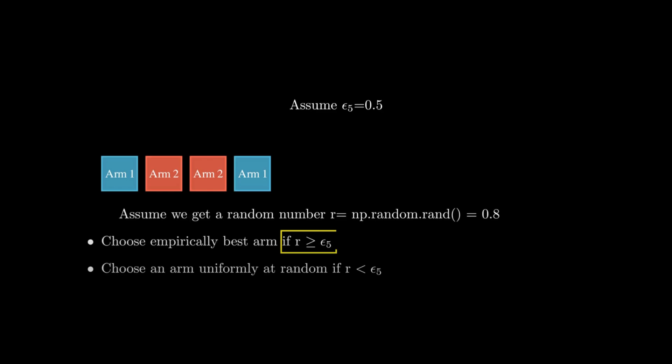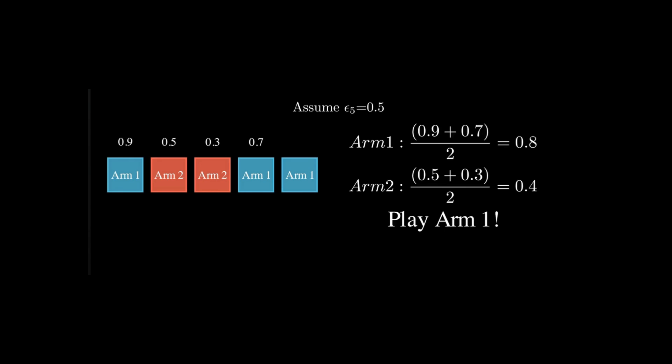So how do we calculate the empirically best arm? To get the best arm, when we ran four experiments, the reward for the first arm in the first experiment was 0.9. The second experiment, arm 2 gave a reward of 0.5. The third experiment, arm 2 gave a reward of 0.3, and the fourth experiment, arm 1 gave a reward of 0.7. So the empirical mean estimate for arm 1 would be 0.8, and empirical mean estimate for arm 2 would be 0.4. So that means that reward for arm 1 would be higher, so we'll play arm 1. And then we repeat this process over and over again to get the maximum reward.